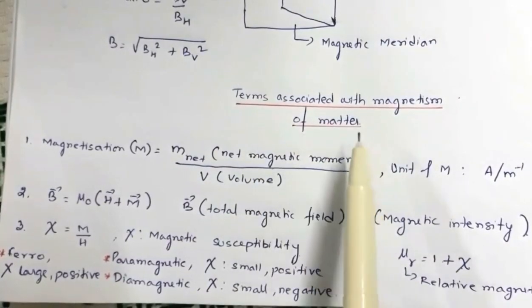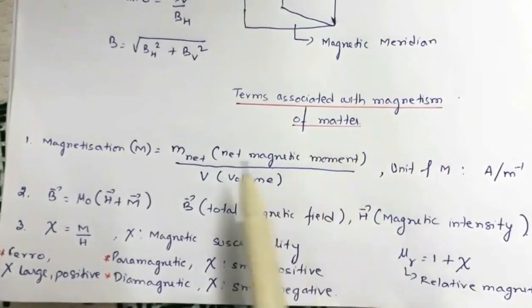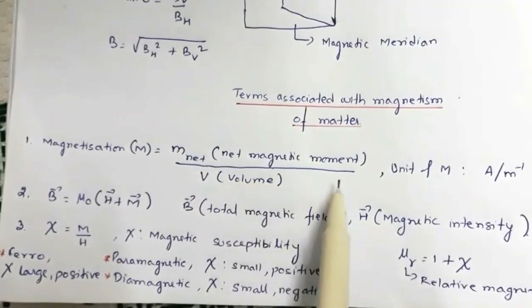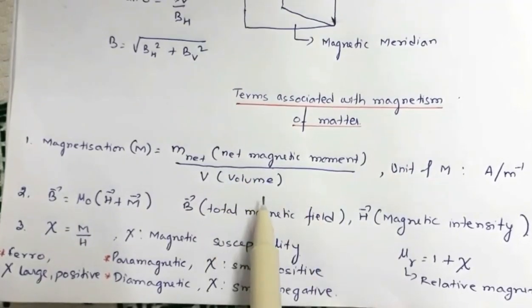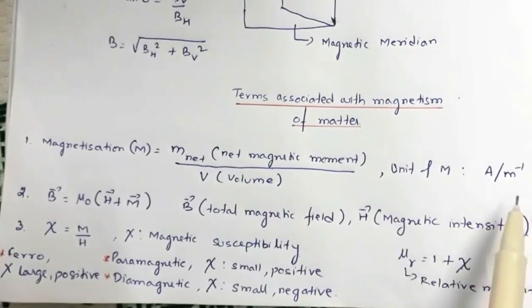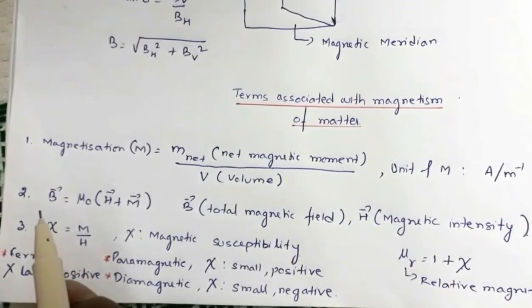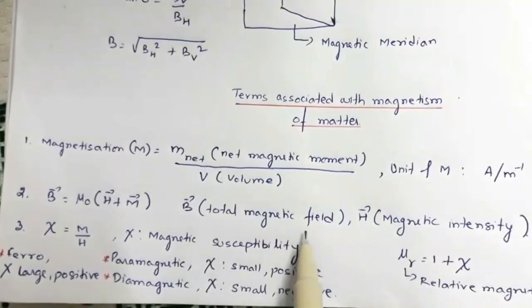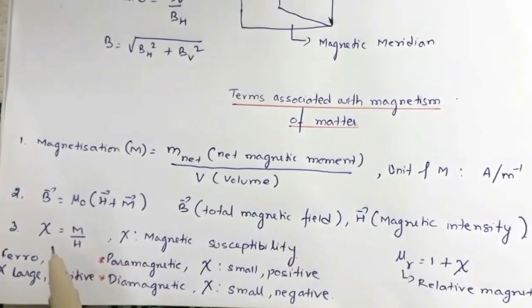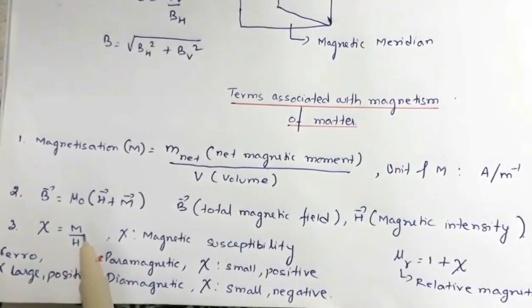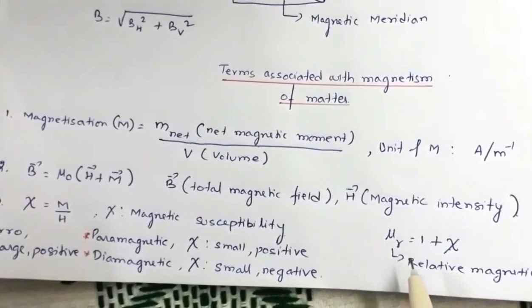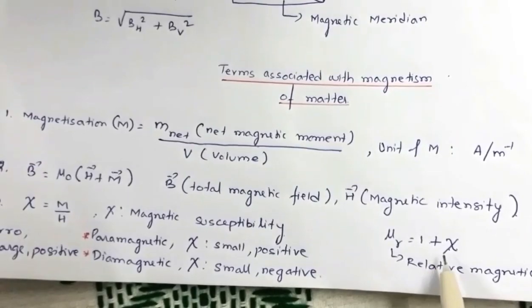Then we have some important terms associated with magnetism of matter. The first term is magnetization — it is the ratio of net magnetic moment to the volume of the material, with units of ampere per meter. The resultant field B = μ₀(H + M), where H is the magnetic intensity. Magnetic susceptibility is the ratio of magnetization to magnetic intensity. Relative permeability equals 1 + χ.